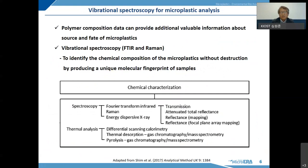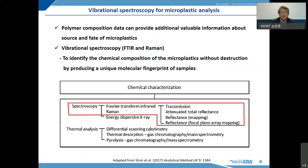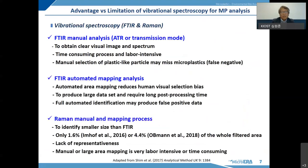Generally, vibrational spectroscopy — FTIR and Raman — is the most popular identification method for microplastics. They can identify the chemical composition of microplastics by producing unique molecular fingerprints of samples without destruction. Among the chemical characterization methods, today I will only cover the spectroscopy method. Each vibrational spectroscopy method has advantages and limitations.